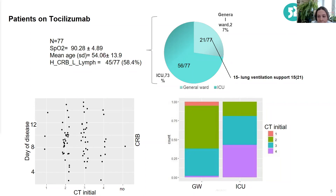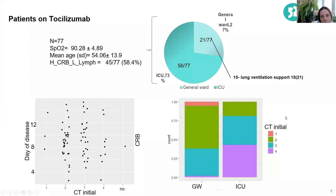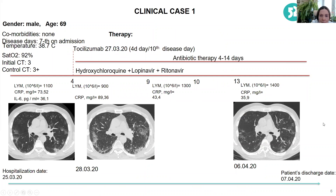We found that administration of tocilizumab at the very beginning of worsening can reverse symptoms faster, reduce some risk factors for bacterial complications, and reduce the risk associated with artificial ventilation. Let me share some clinical cases from our clinic.